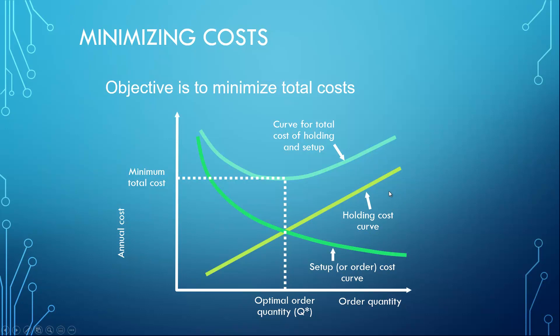First, let's answer how much to order — what will be the optimal order quantity. To do that, we need to look at the cost curve. The ordering cost decreases as order quantity increases, since with large quantities companies can negotiate lower prices, while the holding cost increases as order quantity increases. To lower the overall costs, we need to find that optimal order quantity point, which is the point of the lowest combined cost for both ordering and holding costs.